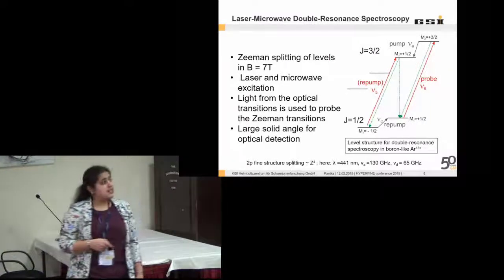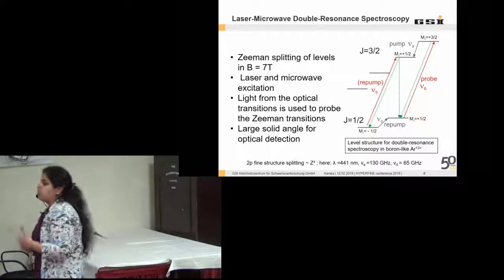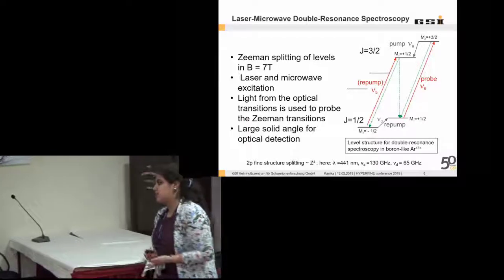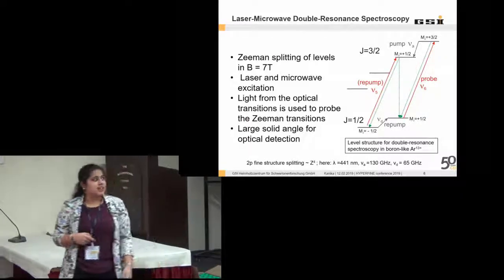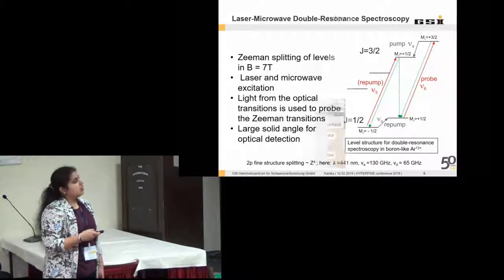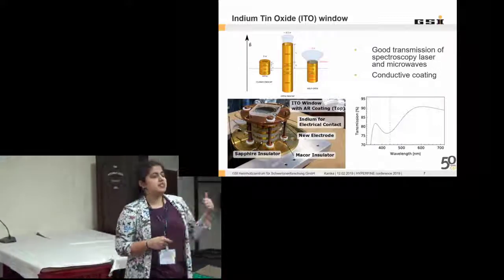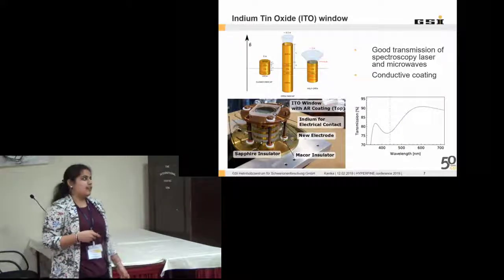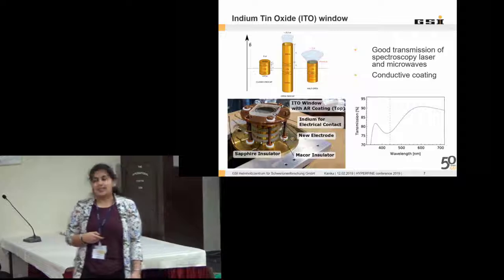For this, we want to detect the fluorescence. This is the reason why we have not one ion but large number of ions, because for single ion it is not possible to detect the fluorescence. We have large solid angles so as to detect the light emitted. For this we have a trap design that we discussed. It is a half open trap, Penning trap, cylindrical. We can have a closed end cap design but it is closed, so no optical access.